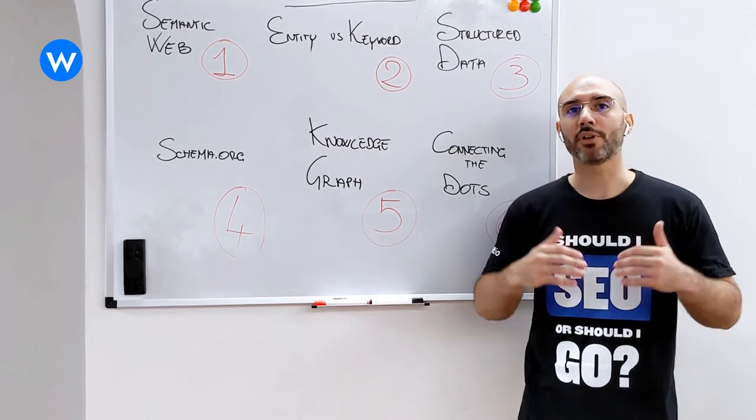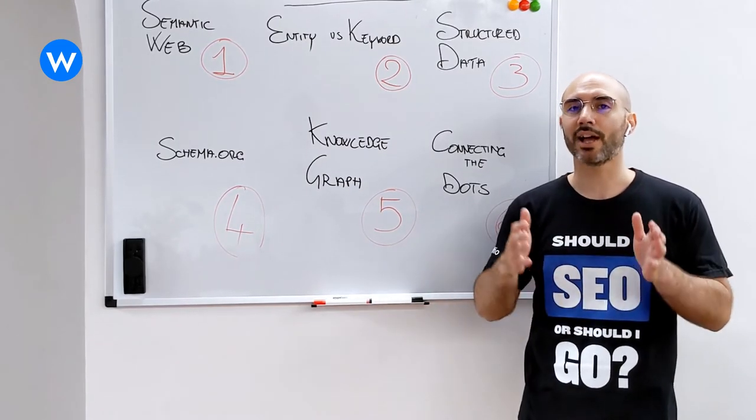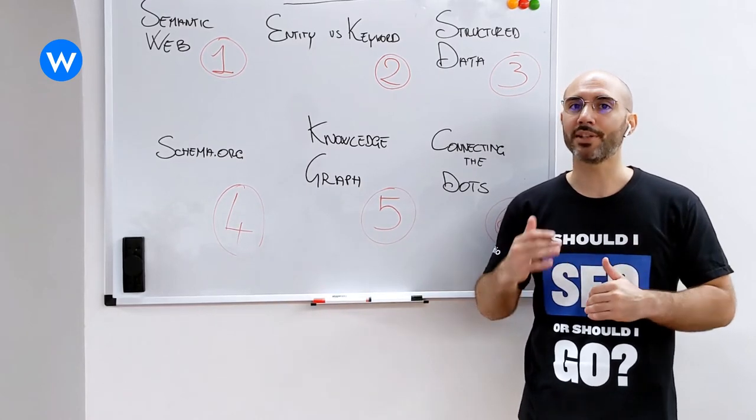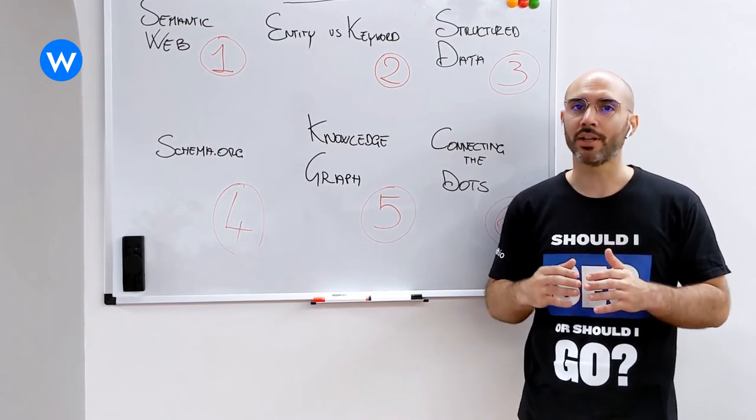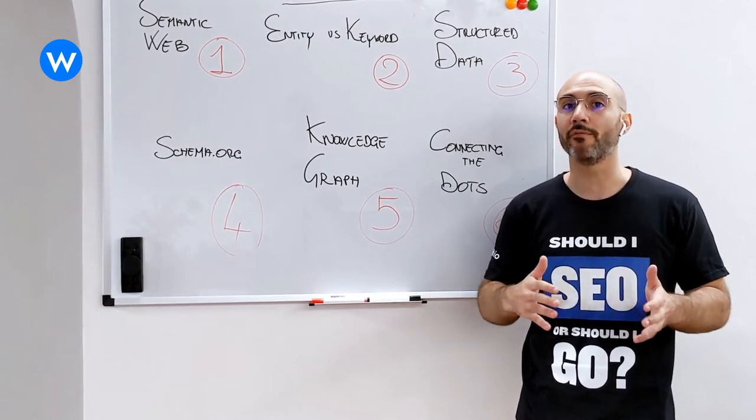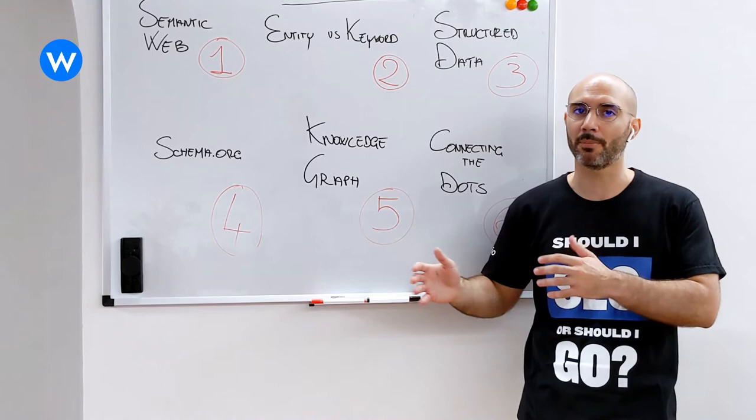Schema.org is a vocabulary that search engines are able to understand. It's not the only vocabulary existing in the semantic web. Before schema was invented, and even today, we have dozens of vocabularies across the semantic web.